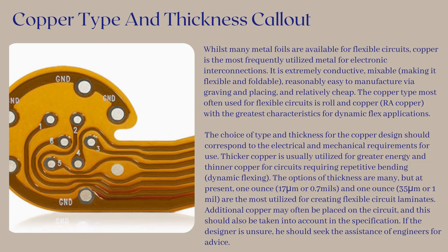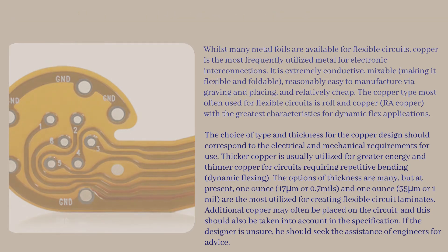The choice of type and thickness for the copper design should correspond to the electrical and mechanical requirements for use. Thicker copper is usually utilized for greater power, and thinner copper for circuits requiring repetitive bending and dynamic flexing. The options of thickness are many, but at present, 1 oz (17μm or 0.7 mil) and 0.5 oz (18μm or 1 mil) are the most utilized for creating flexible circuit laminates. Additional copper may often be placed on the circuit, and if the designer is unsure, they should seek the assistance of engineers for advice.